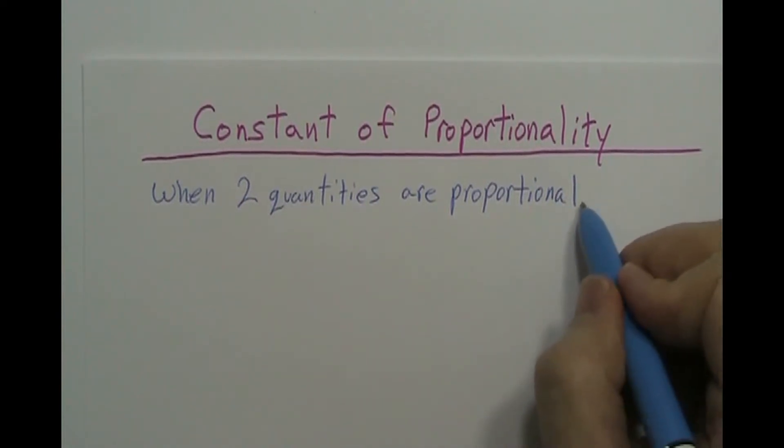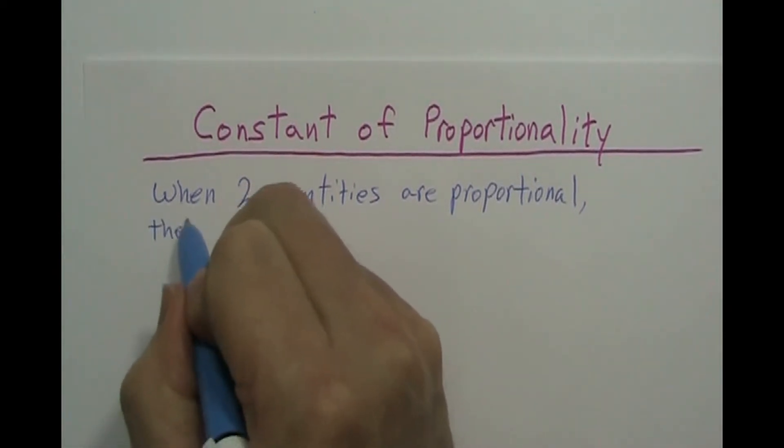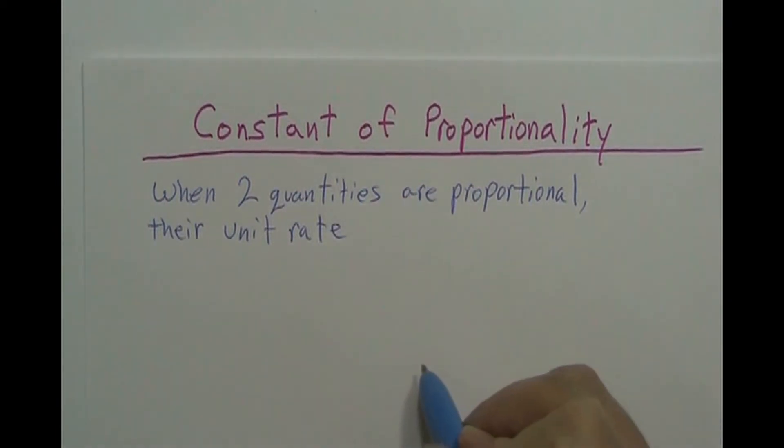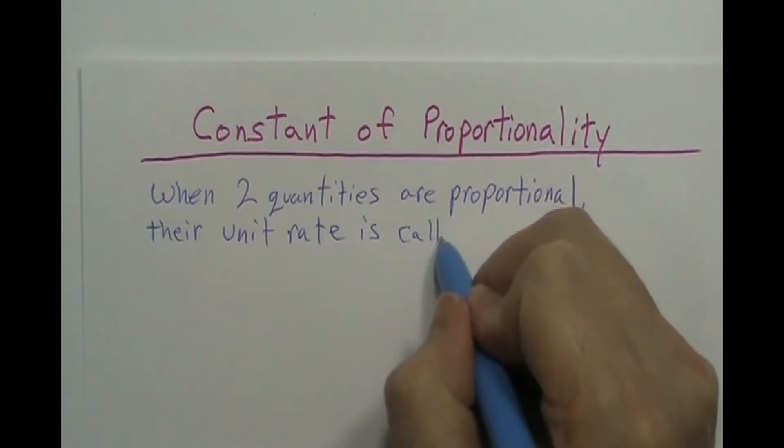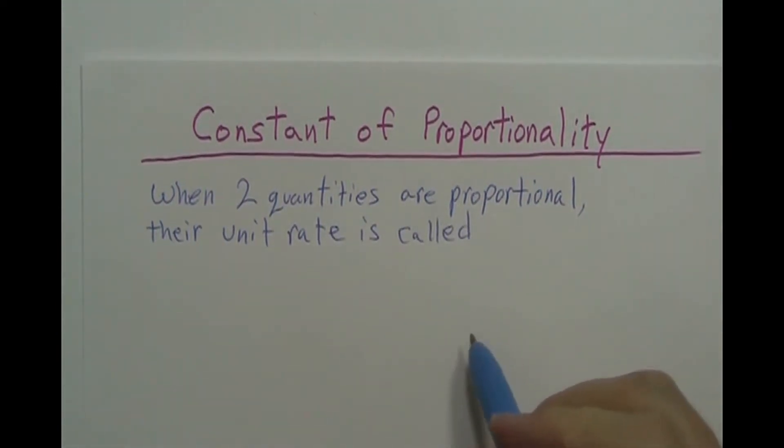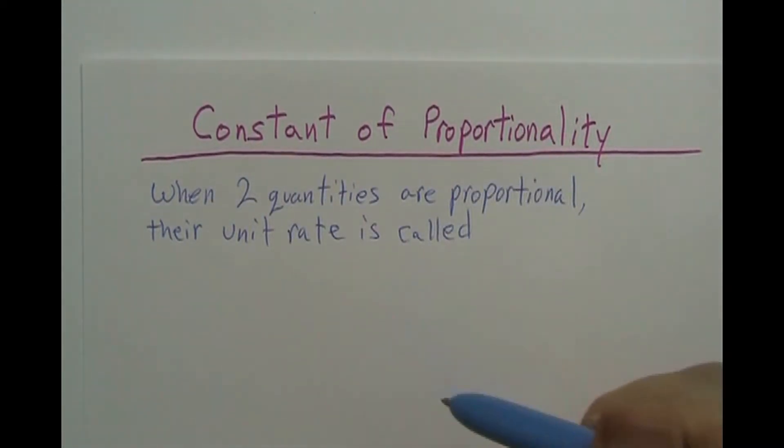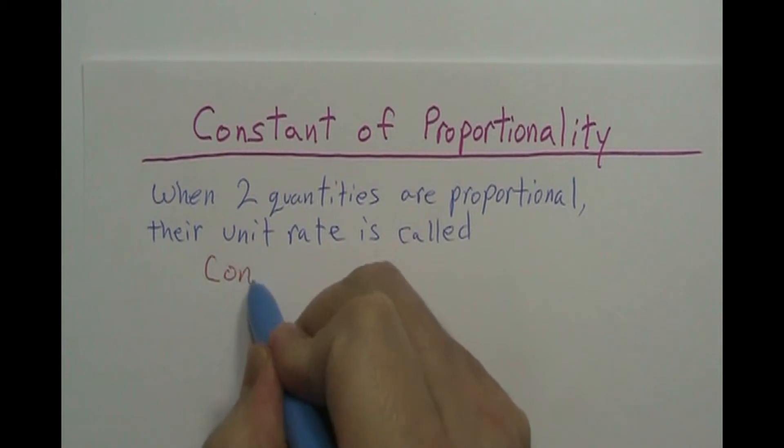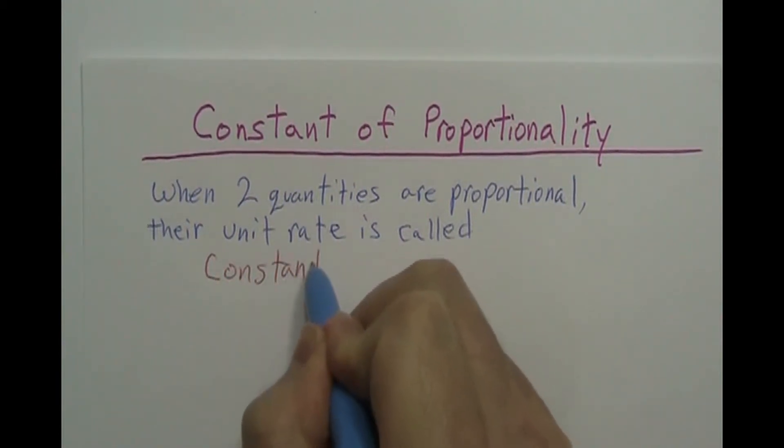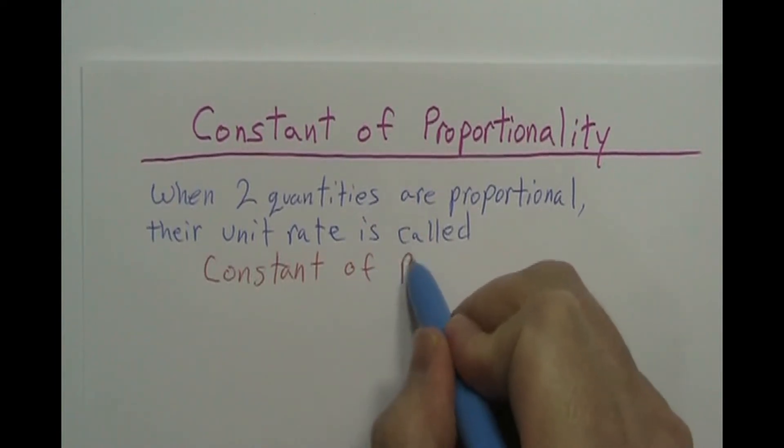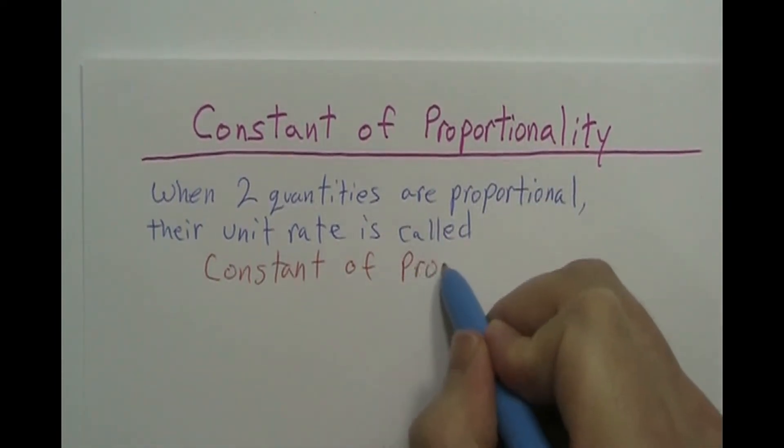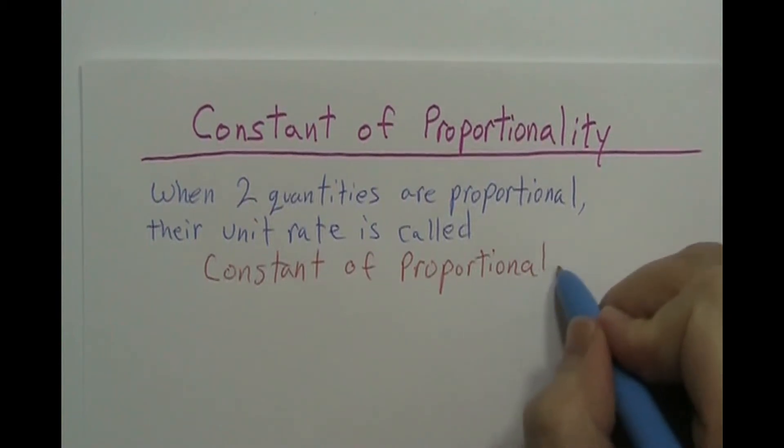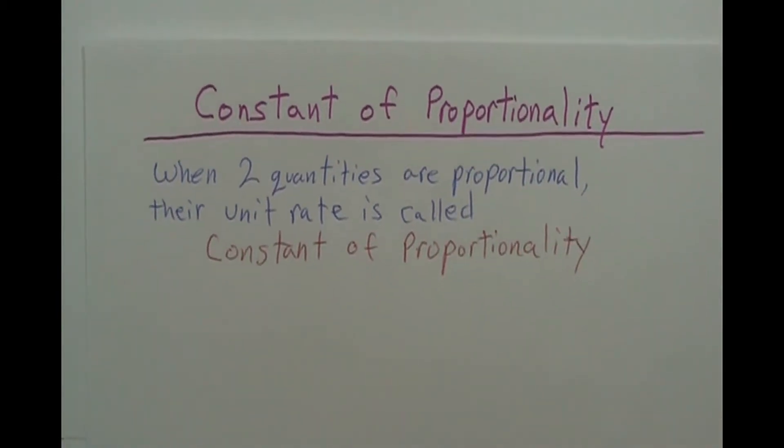When two quantities are proportional, their unit rate, well that's sloppy, is called right up here. That's what it's called. So I need more room so I'll just write it here, constant of proportionality. It's right there if you want to spell it. Proportion, proportional, itty. Proportionality.